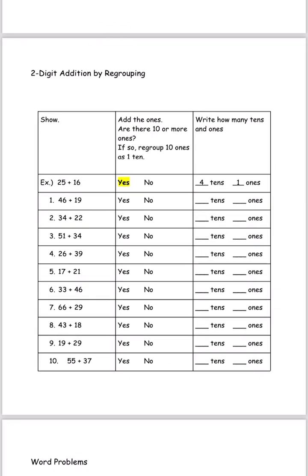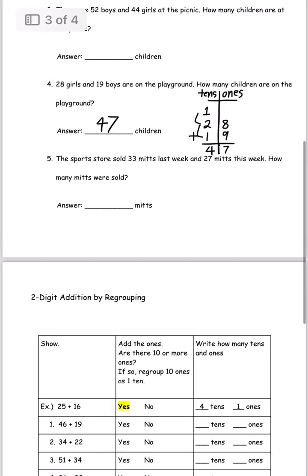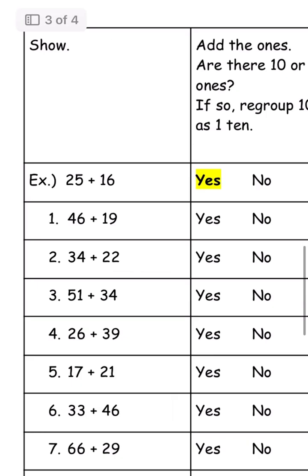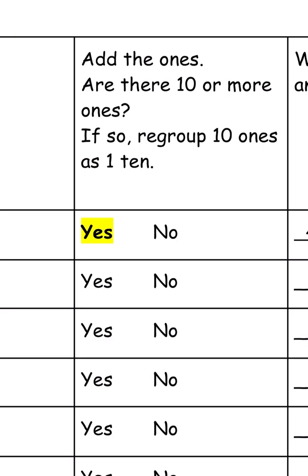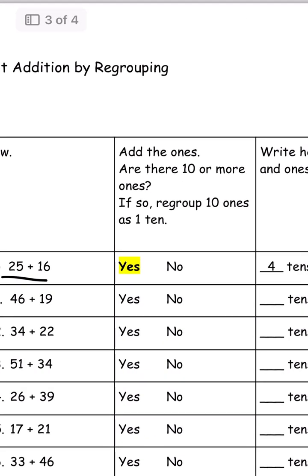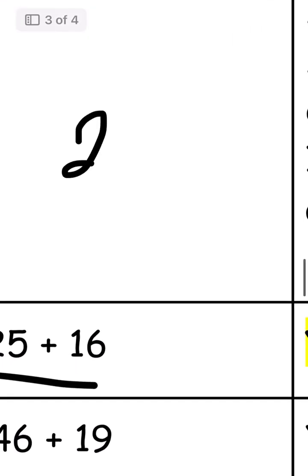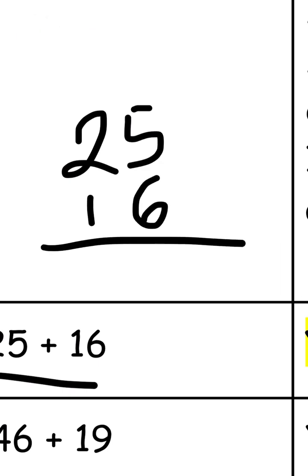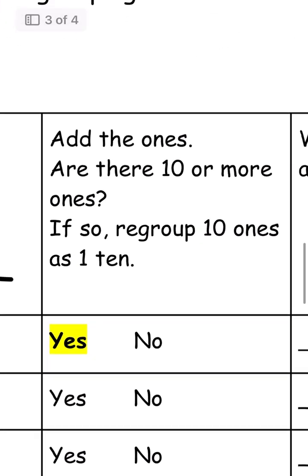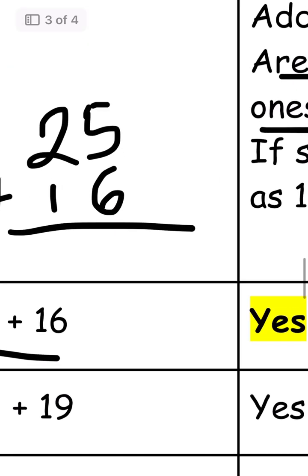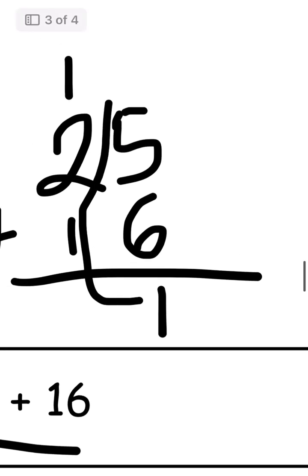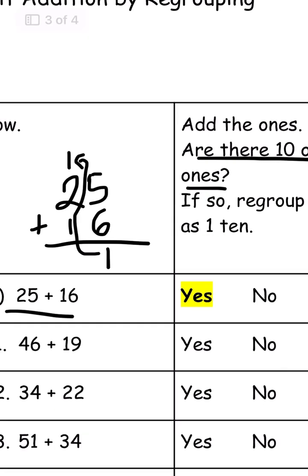Now it says 2-digit addition by regrouping — it's similar to what we just did, but we have to answer questions in a chart. Let's look at the example: 25 plus 16. It says add the ones — are there 10 or more ones? If so, regroup 10 ones as 1 ten. So 5 and 6 are on the ones place. When we add them, 5 plus 6 is 11, which is larger than 9, so there are 10 or more ones. We circle yes and regroup.